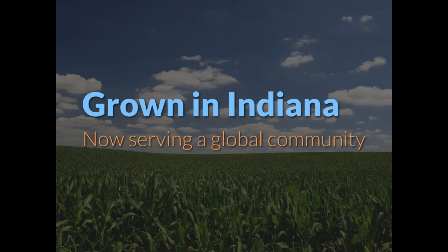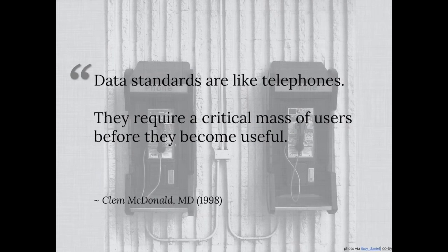While LOINC may have originated here, its goal would never have been met if it was just used in a couple of hospitals in Indiana — it was always meant to be a universal identifier. Data standards like LOINC are like telephones: they require a critical mass of users before they become useful. If you're the only person with a telephone, it's not that helpful, but when everyone has one it's much more useful. Similarly, if you're the only one with LOINC codes it doesn't buy you much, but when lots of people use it as a universal language, that's a much better situation.